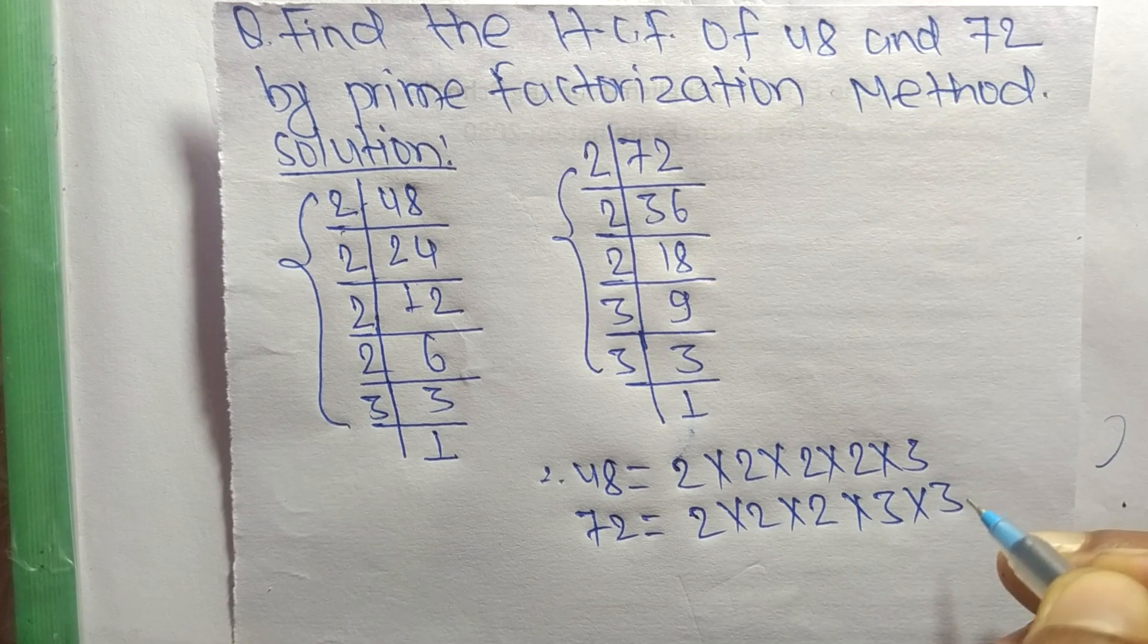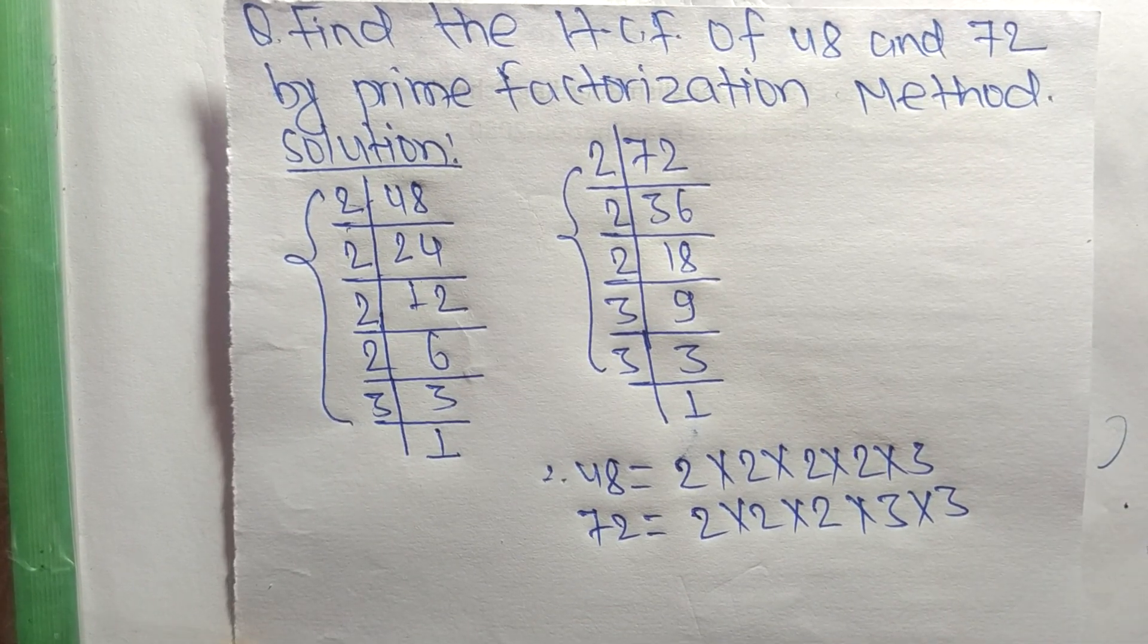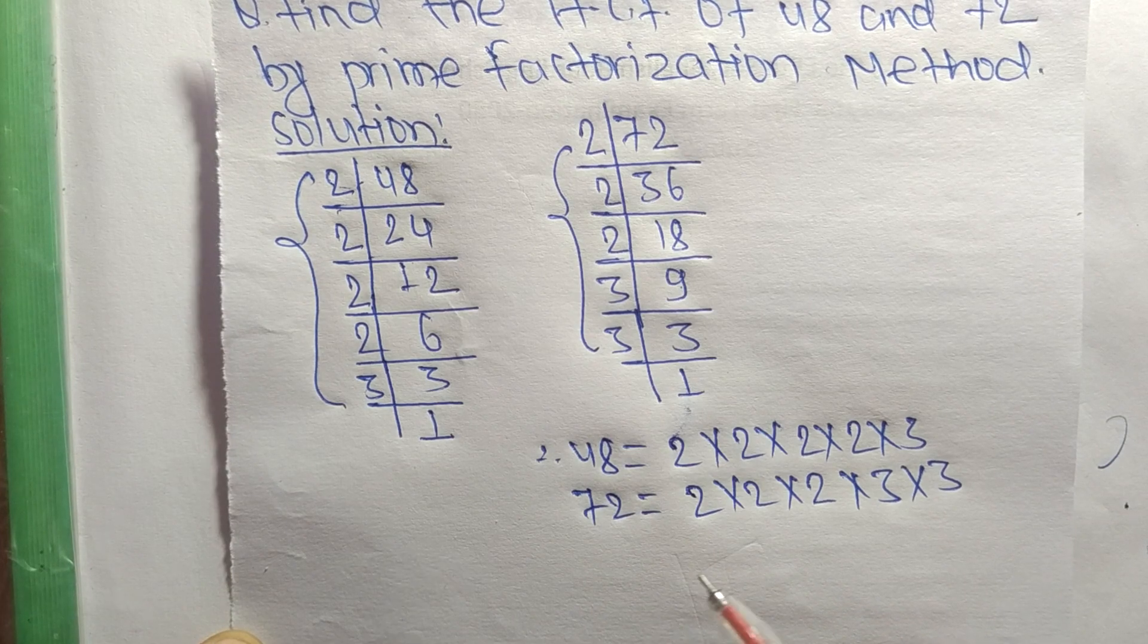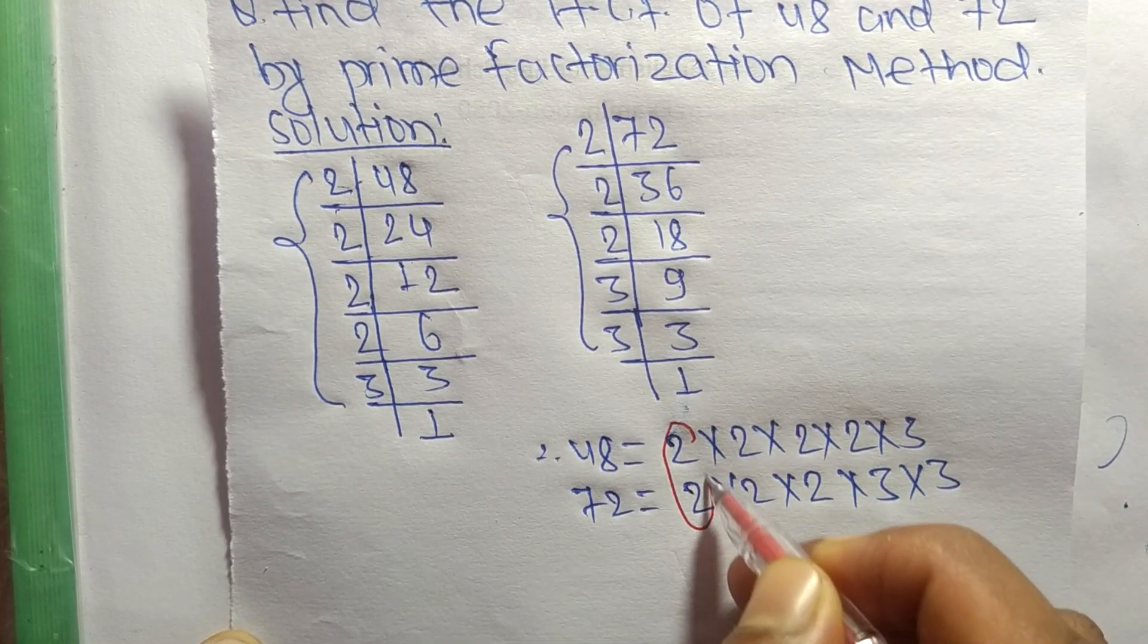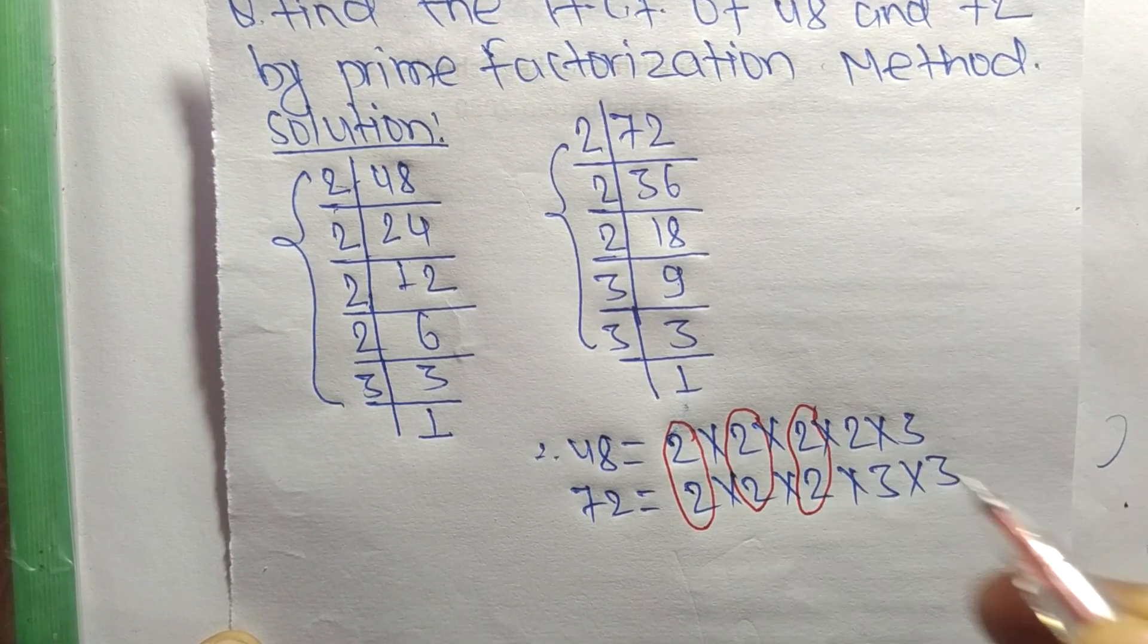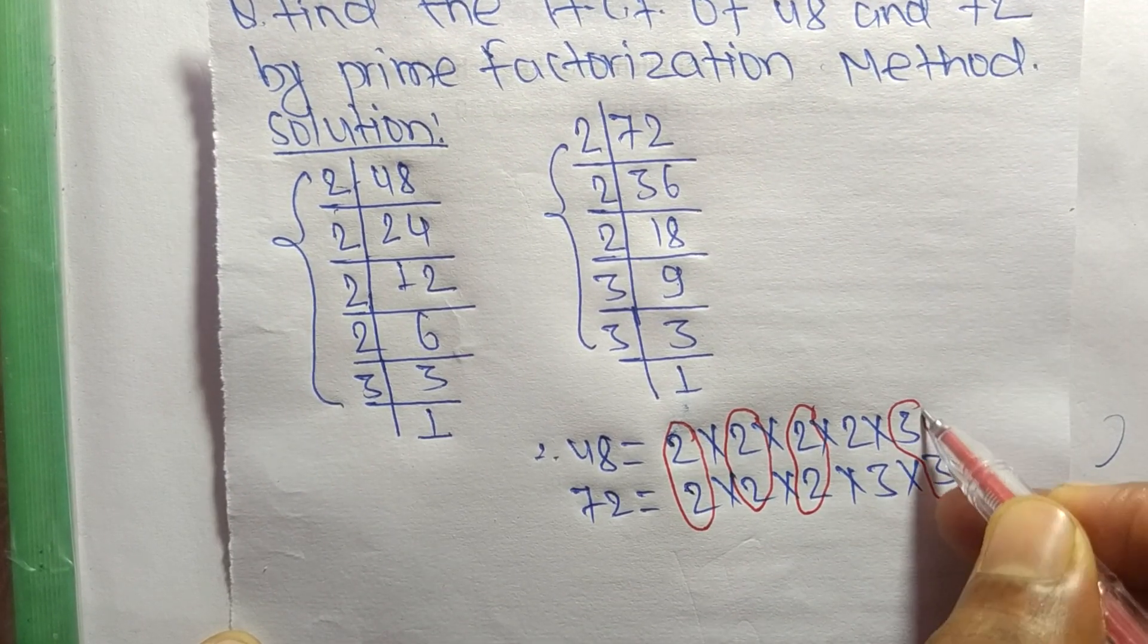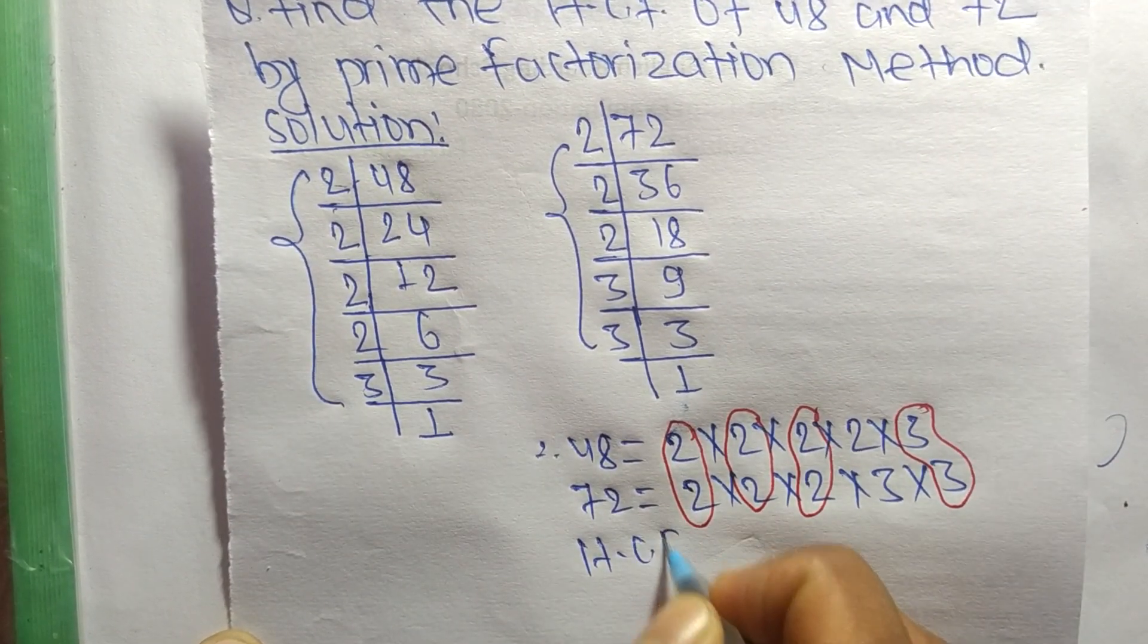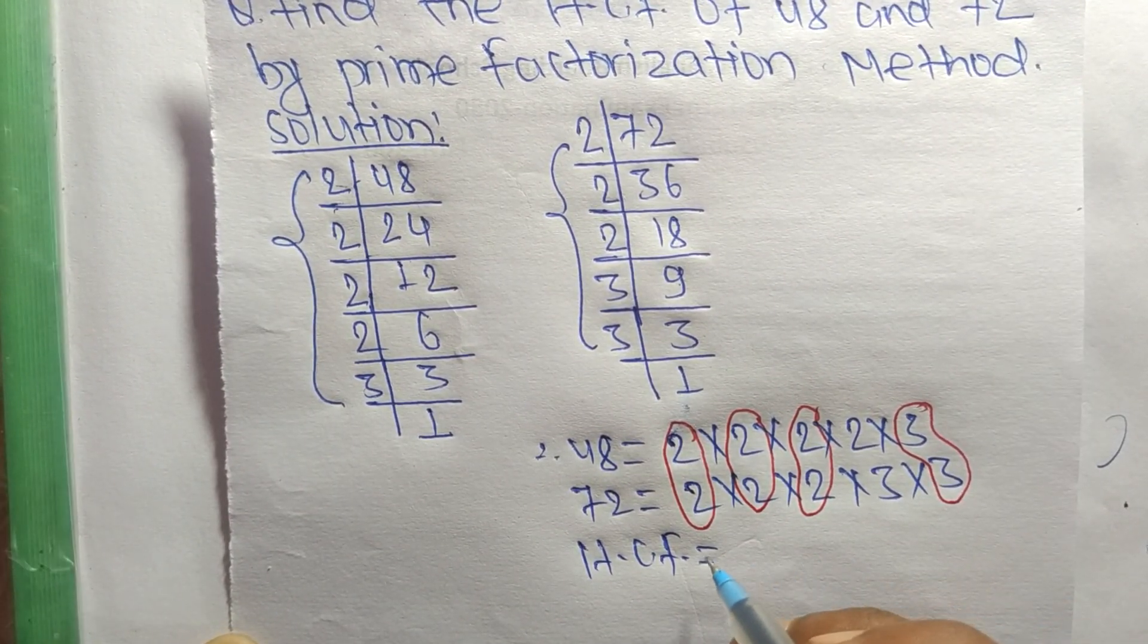Now we select the common factors in this prime factorization. So the first common here is 2, second common 2, third one 2, and last one is 3.